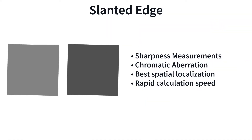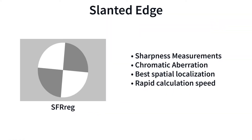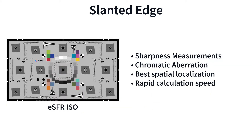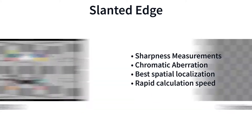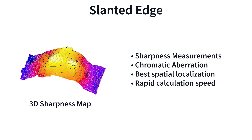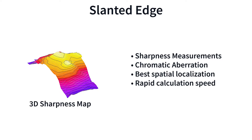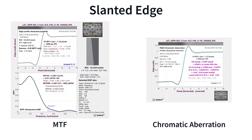Slanted edges make the most efficient use of space and allow for rapid calculation speed for sharpness and chromatic aberration measurements. This makes them ideal for plotting a detailed map of MTF. Imatest slanted edge analysis is resistant to noise and to the curvature of the edges due to optical distortion.